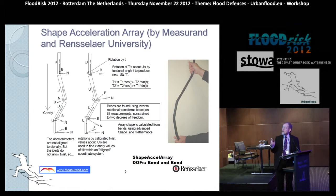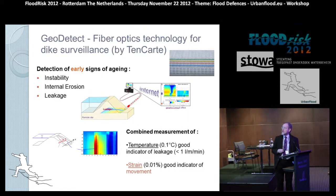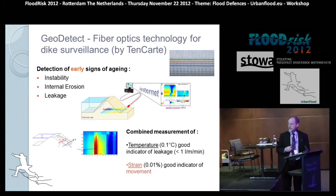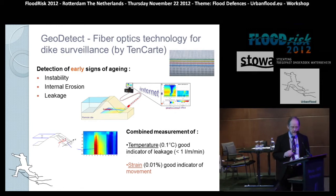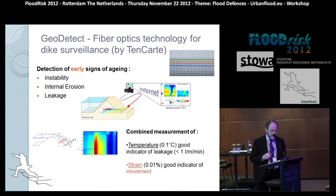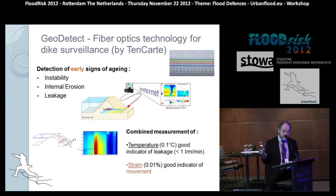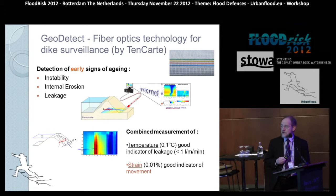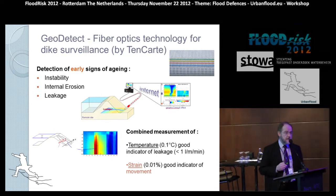The shape acceleration array was developed by Mejurand and Rensselaer University, and we have Tariq Abdoon from that organisation here today. Finally, fibre optic technology — for those not familiar with the idea — can pick up changes because of the way light is reflected or refracted back up the fibre optic cable as a result of either strain or temperature changes. It's an unusual use of fibre optics, but actually quite useful.